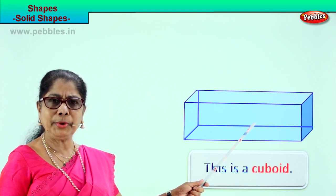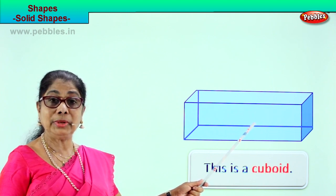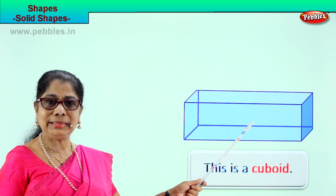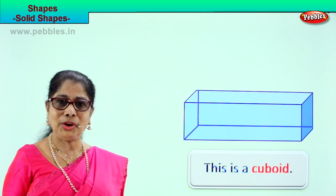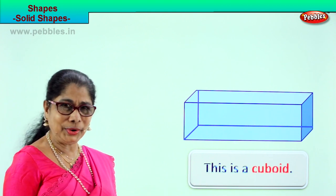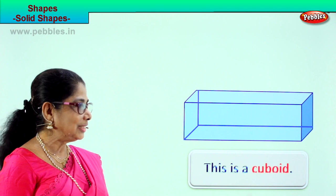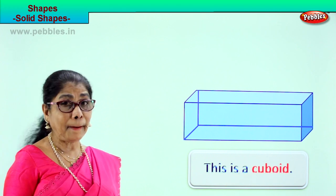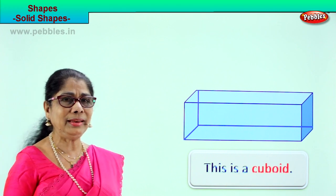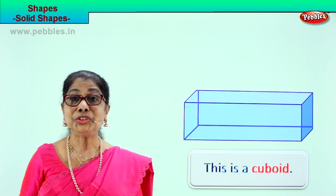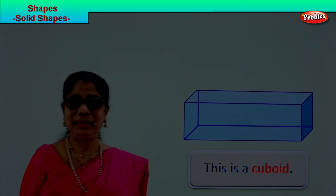What does mummy do with the cardboard? She will place things inside and put it in the loft. Cuboid. So we have learnt many solid shapes today.